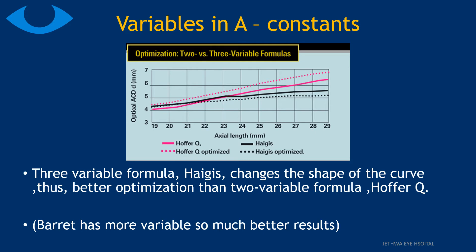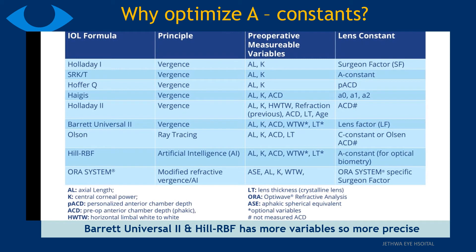Let us see how many variables are involved in A-Constant calculations. As shown in this graph, a greater number of variables will give a better A-Constant. Barrett has more variables and can give better results. In comparison of pre-operative measurable variables across different IOL formulas, Barrett Universal II and Hill RBF have more variables, making them more precise in A-Constant optimization.